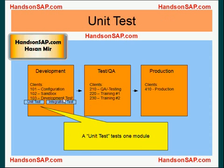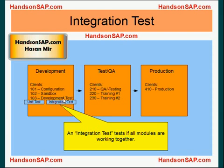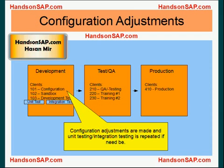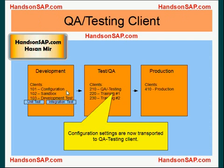Unit testing is basically testing of one module, and integration testing is testing all modules together to see if they are working together, because there are interfaces between the modules. After the testing, if you need to make more changes in the configuration, you go back to the configuration client, do some adjustments, and repeat the testing if need be. There will be iterations going back and forth. There will be a point when you say our configuration looks 100% perfect.